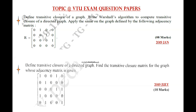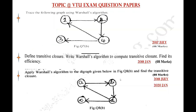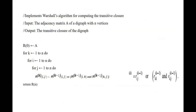We shall briefly discuss the algorithm. The purpose: implement Warshall's algorithm for computing transitive closure. Input: the adjacency matrix A of a digraph with n vertices. Output: the transitive closure matrix. The structure uses three nested for-loops — for k from 1 to n, for i from 1 to n, for j from 1 to n — processing every element of the matrix at every stage.